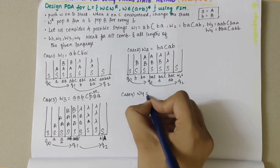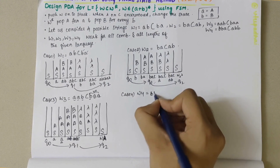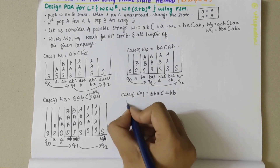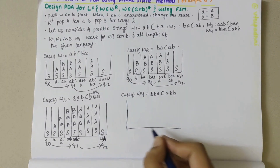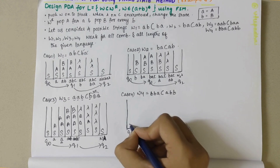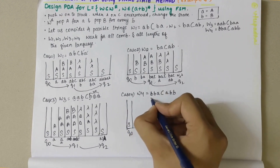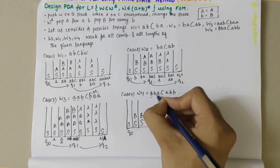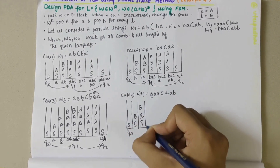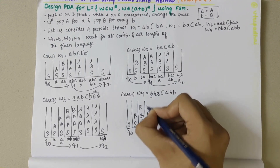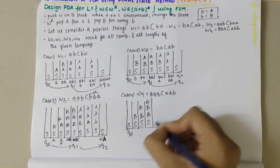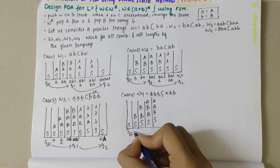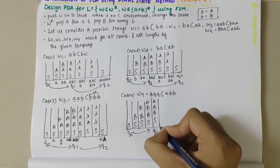For case 4, W4 = B B A C A B B. Initially in Q0 state, the stack was empty. When B is encountered, push capital B. Again B is encountered, push capital B. Then A is encountered, push capital A on top — stack now holds A, B, B. Then C is encountered, so whatever is on top of stack stays as it is, but the state changes from Q0 to Q1.